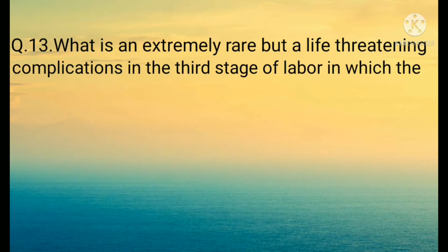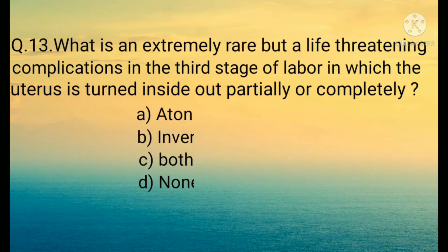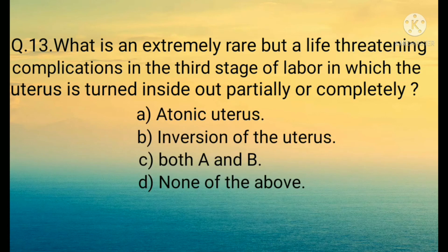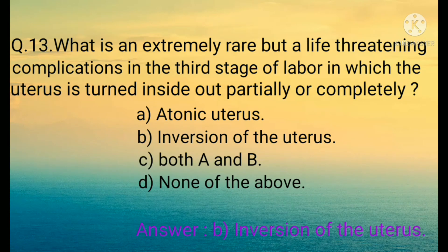Question number thirteen: What is an extremely rare but life-threatening complication in the third stage of labor in which the uterus is turned inside out, partially or completely? Options are: A) Turning uterus, B) Inversion of the uterus, C) Both A and B, D) None of the above. The correct option is B) Inversion of the uterus.